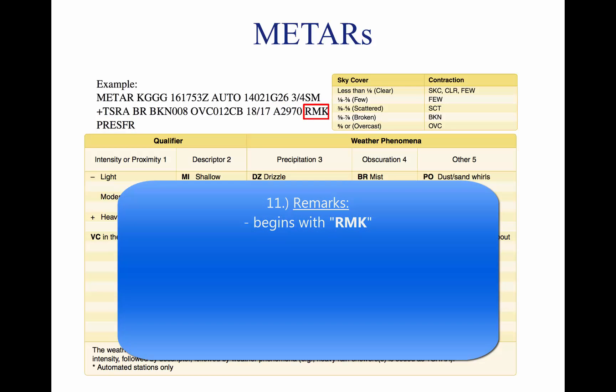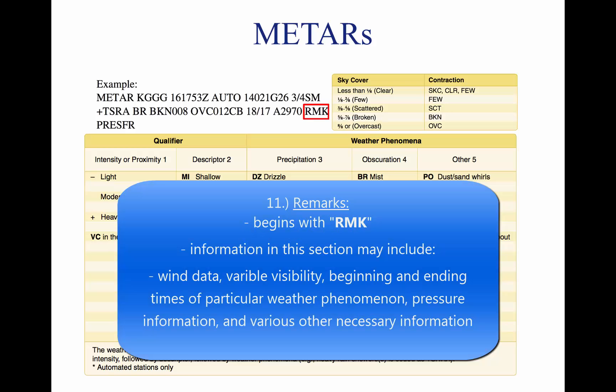Eleven, remarks. The remarks section always begins with the letters RMK. Comments may or may not appear in this section of the METAR. The information contained in this section may include wind data, variable visibility, beginning and ending times of particular phenomena, pressure information, and various other information deemed necessary.